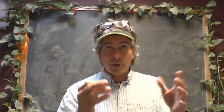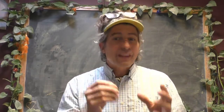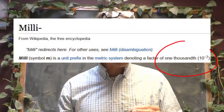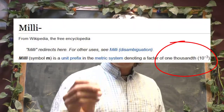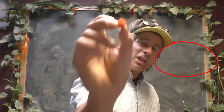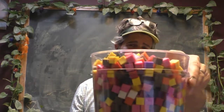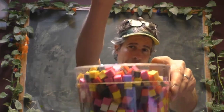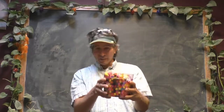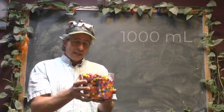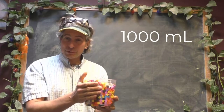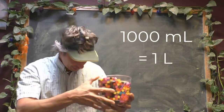So let's start with the milliliter. Why is it called a milliliter? Well, milli is the thousandth, so a milliliter is a thousandth of a liter. What that means is if we take this milliliter and get it together with 999 of its buddies, we now have one thousand milliliters, and one thousand milliliters is equivalent to one liter.